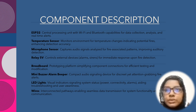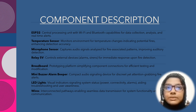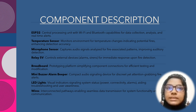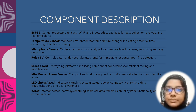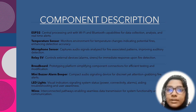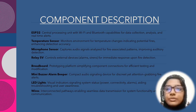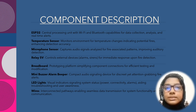First, we need the ESP32 — a central processing unit with Wi-Fi and Bluetooth capabilities for data collection, analysis, and real-time alerts. The temperature sensor monitors the environment for temperature changes indicating potential fires, enhancing detection accuracy. Third is the microphone sensor — it captures audio signals and analyzes them for fire-associated patterns, improving auditory detection. Fourth is the relay, a 5-bit control for external devices for immediate response upon fire detection. Fifth is the breadboard — a prototyping platform simplifying component connections for efficient testing and modification. Sixth is the mini buzzer alarm beeper, a compact audio signaling device for attention-grabbing fire alerts.